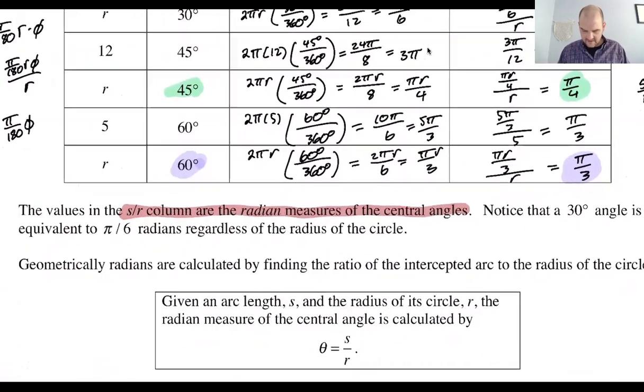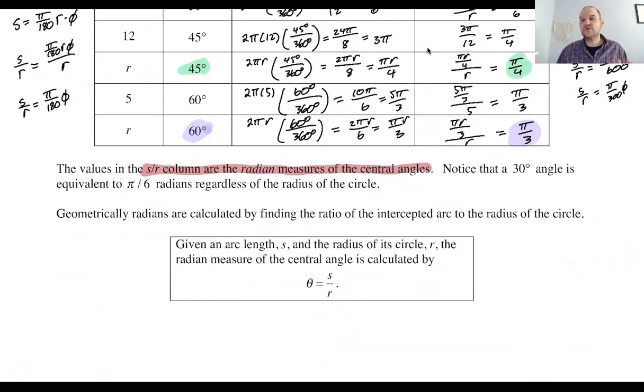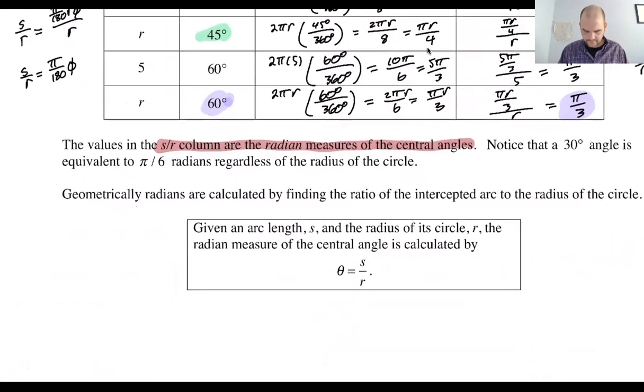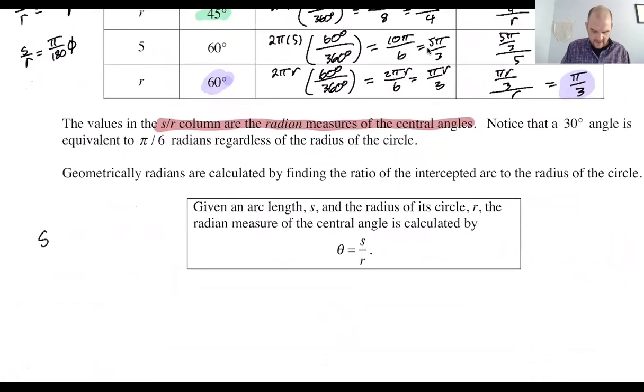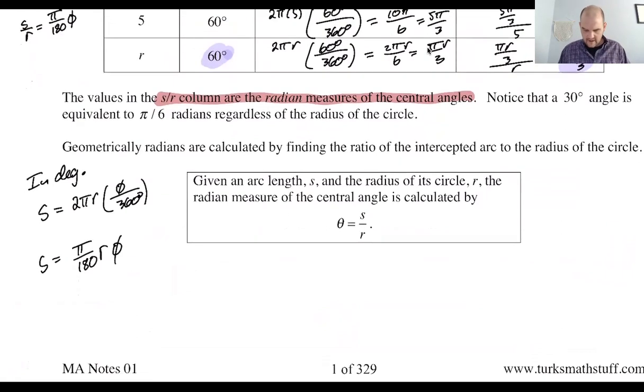So we are going to talk about that extensively. What you need to memorize for sure from this page: arc length formula, right? So S is going to be, in degrees, S is going to be 2πr and then phi out of 360, which means that S is going to be π over 180 times r times phi. And then you need to memorize, so memorize this for sure. And then you also, this is some weird highlighting, memorize this, and then you also are going to memorize this. These are the key takeaways from this page.